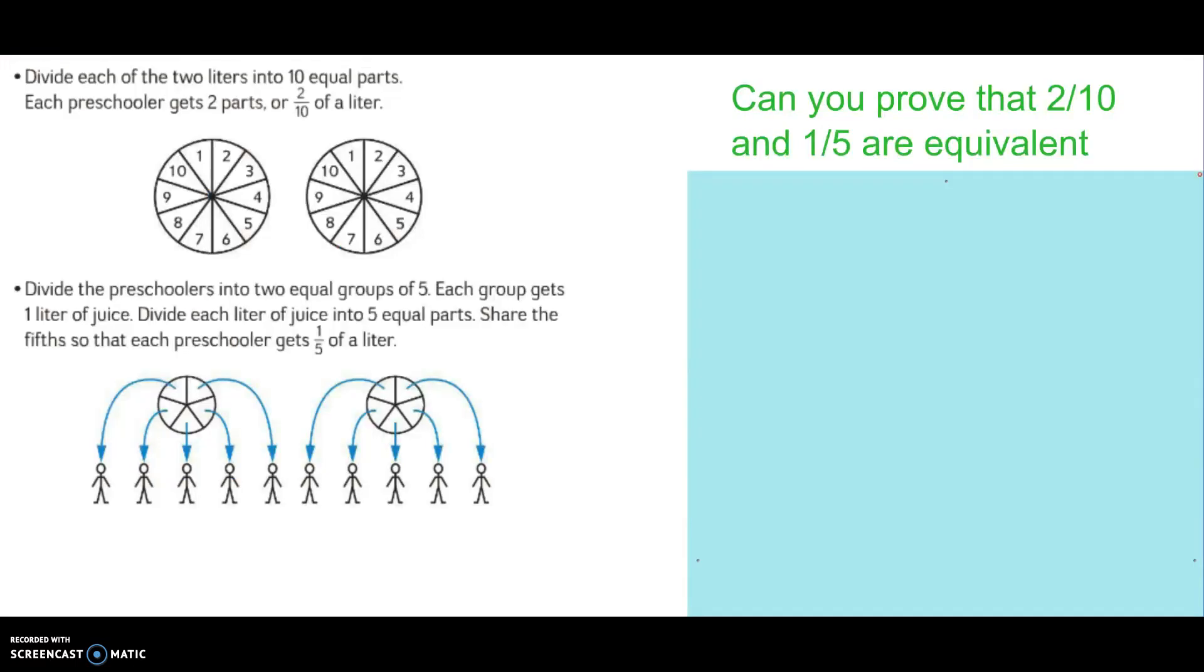One way we can divide the two liters into ten equal parts. Then let's see, student number one is going to get a tenth from this liter and a tenth from this liter. So each student will get two-tenths.